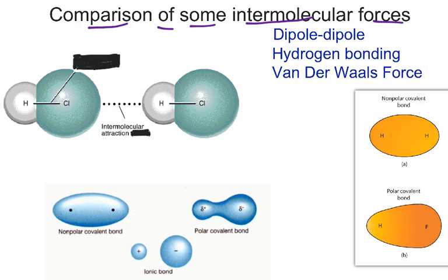Dipole-dipole, or molecular polarity — we've covered it in another video, but as a refresher — it happens when you have a difference in electronegativities within the molecule. We know chlorine has a higher electronegativity than hydrogen, so we expect chlorine to have a partially negative charge, and we expect hydrogen to have a partially positive charge. These two different charges represent the poles, and two meaning 'di,' you've got your dipoles right there.